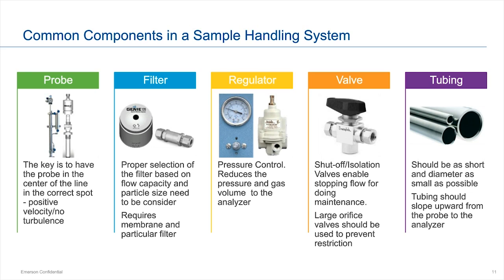Valves — isolation or shutoff valves — assist with maintenance and help avoid back pressure. Make sure the orifice is large; if the tubing orifice is smaller than the valve orifice, you'll create a pressure drop that can cause hydrocarbon fallout. Tubing: in most cases you'll need tubing from the probe to the GC — 316 stainless steel, quarter inch for gas and three-eighths inch for liquid. A tip: if the tubing tilts outward slightly, gravity helps move contaminants backward away from the GC.